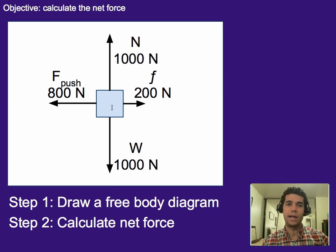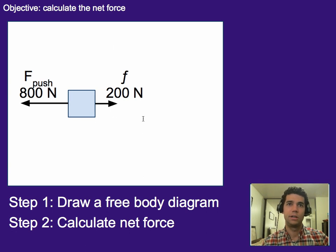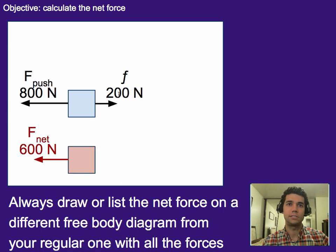So let's begin to calculate the net force in this case. We know that these two cancel so we can take them out of the picture. And that leaves us with just the 800 newtons to the left and the 200 newtons to the right. Which means they partially cancel. 800 minus 200 in this case gives us a net force of 600 to the left.